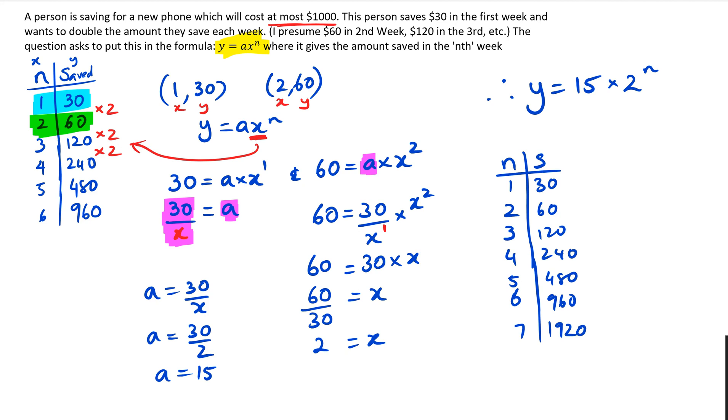So some people might say because it's at most $1000 and that he would need to go to the seventh week. It's a classic mistake people do and that's not what's happening here, because remember each week he's actually saving extra. So that means in the first week, it's almost like we need to create another line to say what he's got in total.